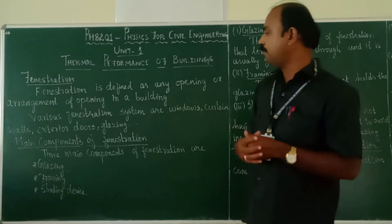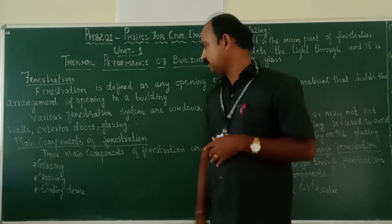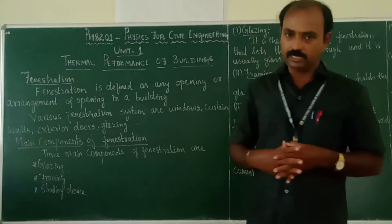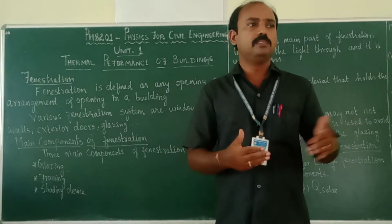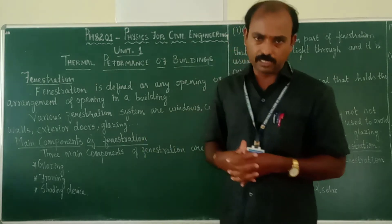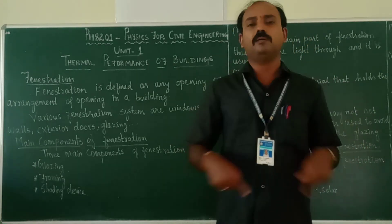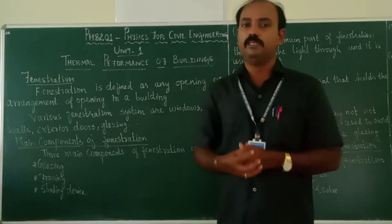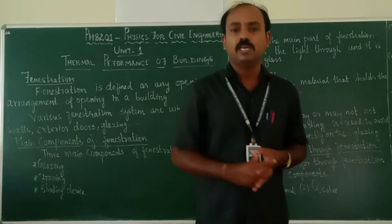The three main components of fenestration are: glazing, framing, and shading devices. Glazing is the arrangement of glass through which light enters the building. Framing is the part that holds that glass in place. Shading devices include sunshades and similar elements. These are the main components of fenestration.